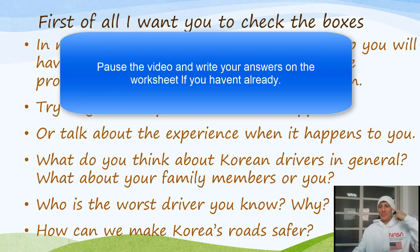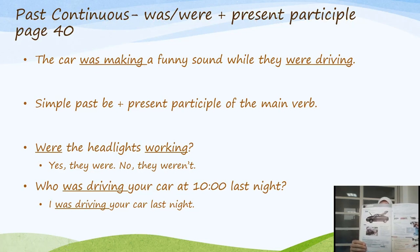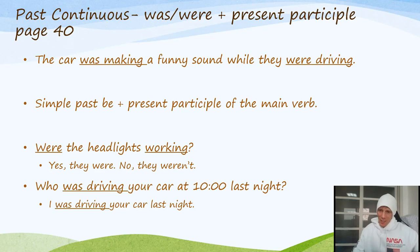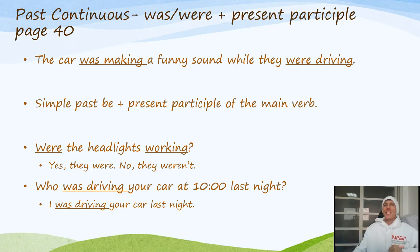Now we're moving on to grammar. On page 40 there is a picture of a car — don't worry about the car parts, it's not a mechanic test. I want you to look at the grammar, which is called the past continuous. From the title we know it's in the past and it was continuous — something was happening and continuing. In the past continuous, we always have to remember: was or were, plus the present participle.